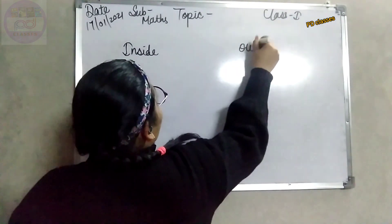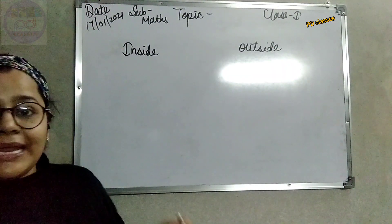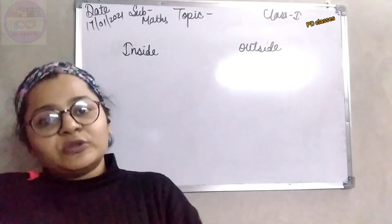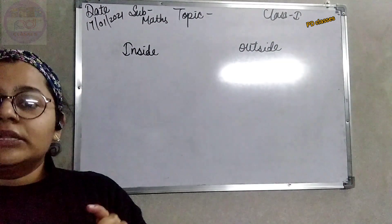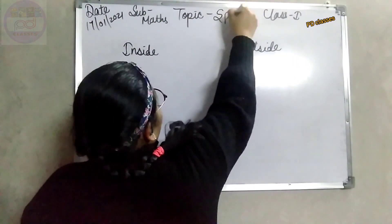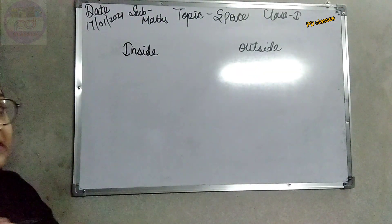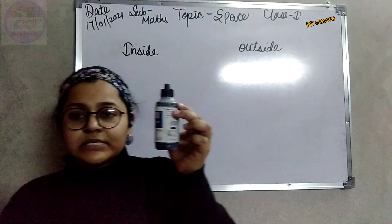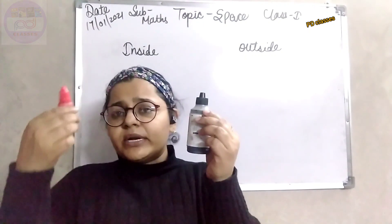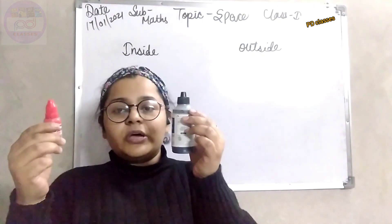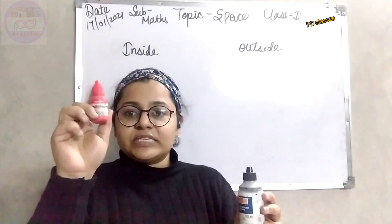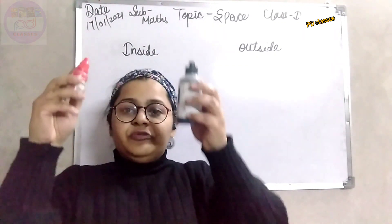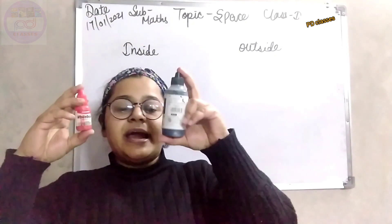Inside and outside — anything kept in is known as inside and anything kept out is known as outside. So today we will be learning the topic of space. Now, I want to ask about this and this — which is the bigger one and which is the smaller one? This one is definitely bigger and this one is definitely smaller. We have defined bigger and smaller by looking at their sizes.